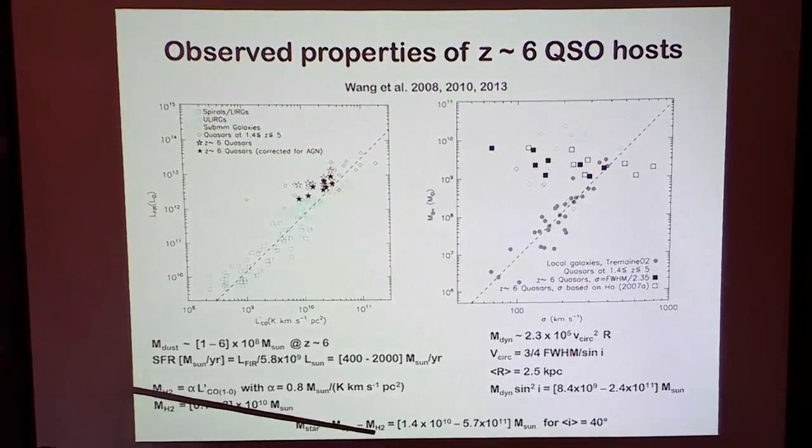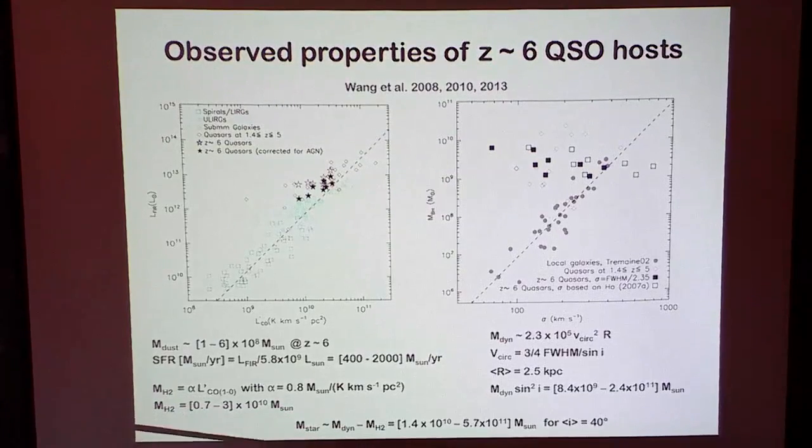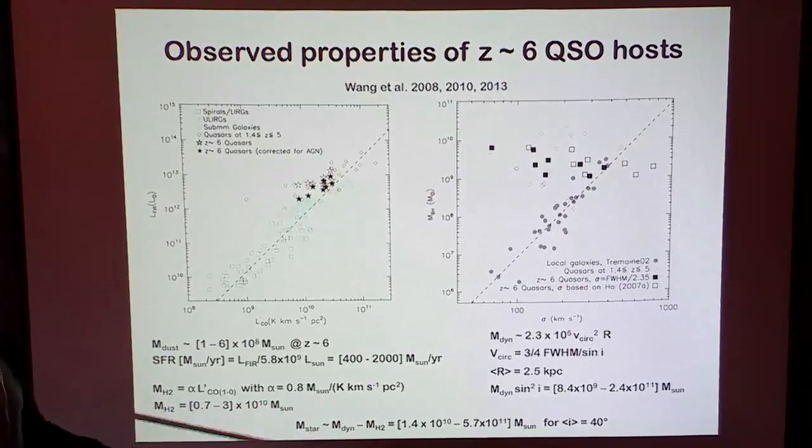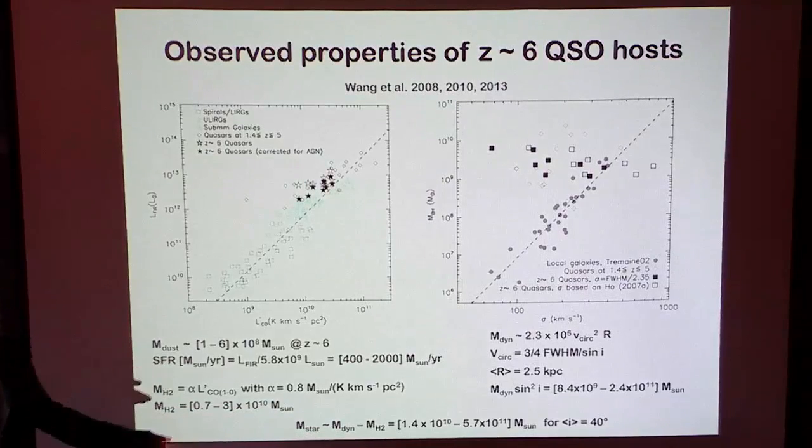Those are dynamical gas masses — exactly. So that is labeled M-star, but it is some kind of dynamical mass. Usually this is what they do; you don't have any other means of estimate.